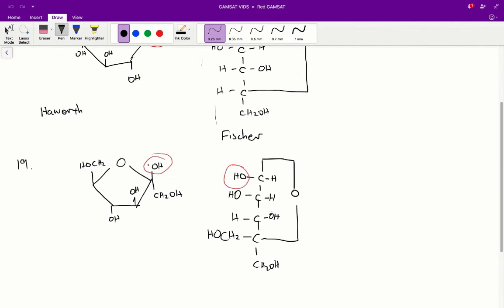So basically, A is the correct answer because if we go around in a clockwise fashion reading only the top groups on the Haworth structure, then that's equivalent to reading down the page on the left-hand side of the Fischer structure. So A is the correct answer for question 21.